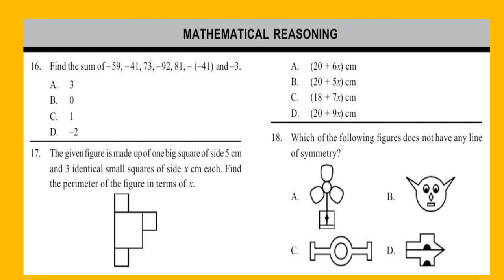Question 17: The given figure is made up of one big square of side 5 cm and three identical small squares of side x cm each. Find the perimeter of the figure in terms of x. Question 18: Which of the following figures does not have any line of symmetry?